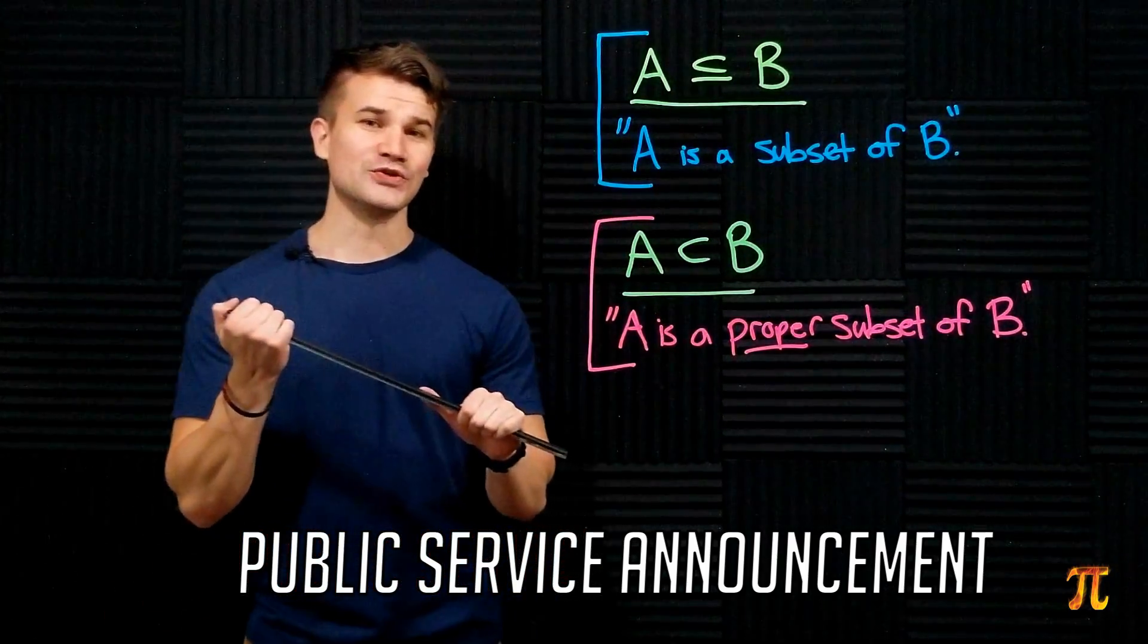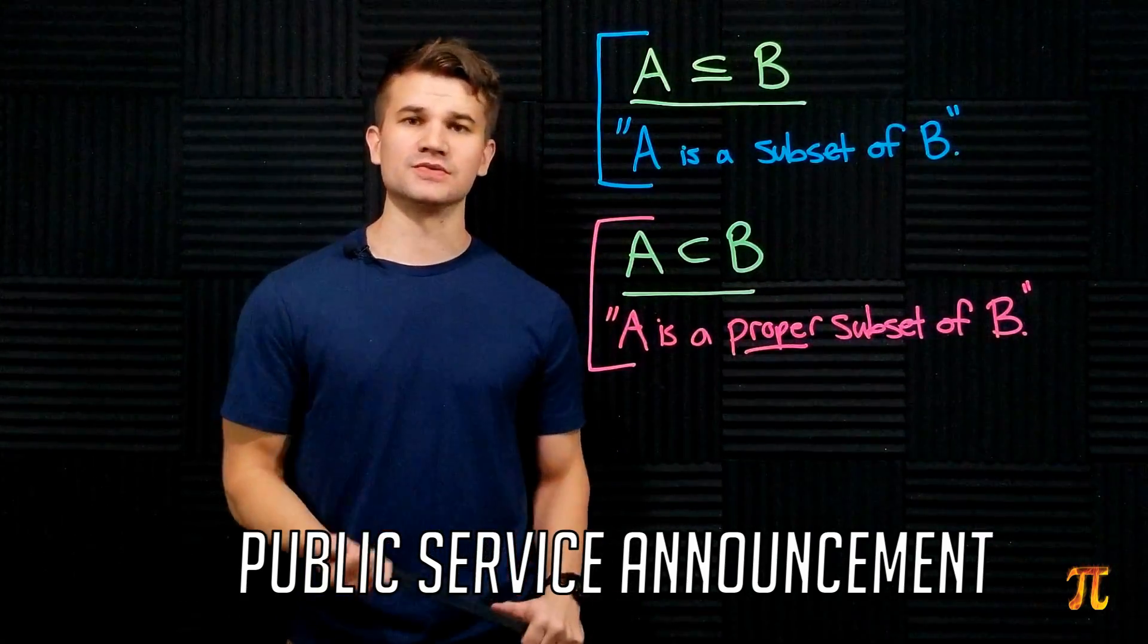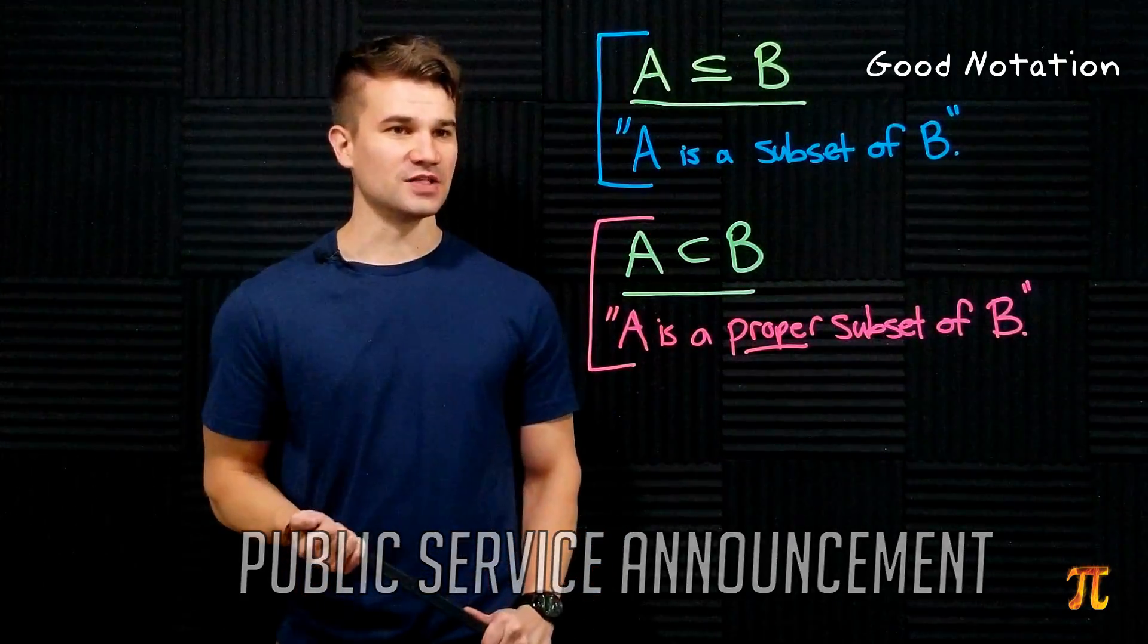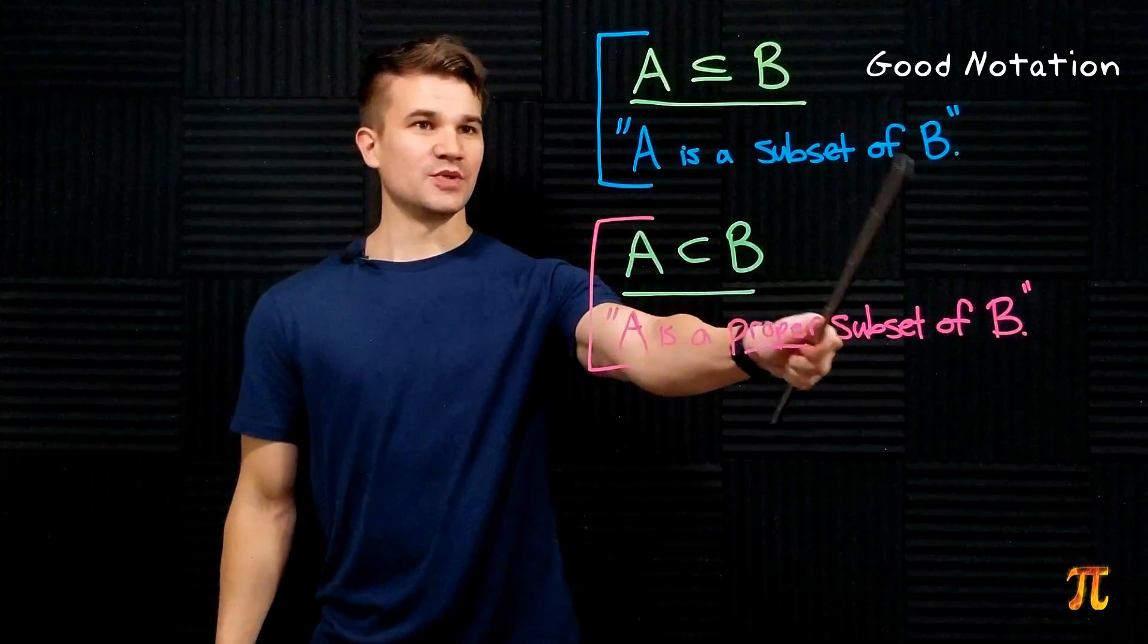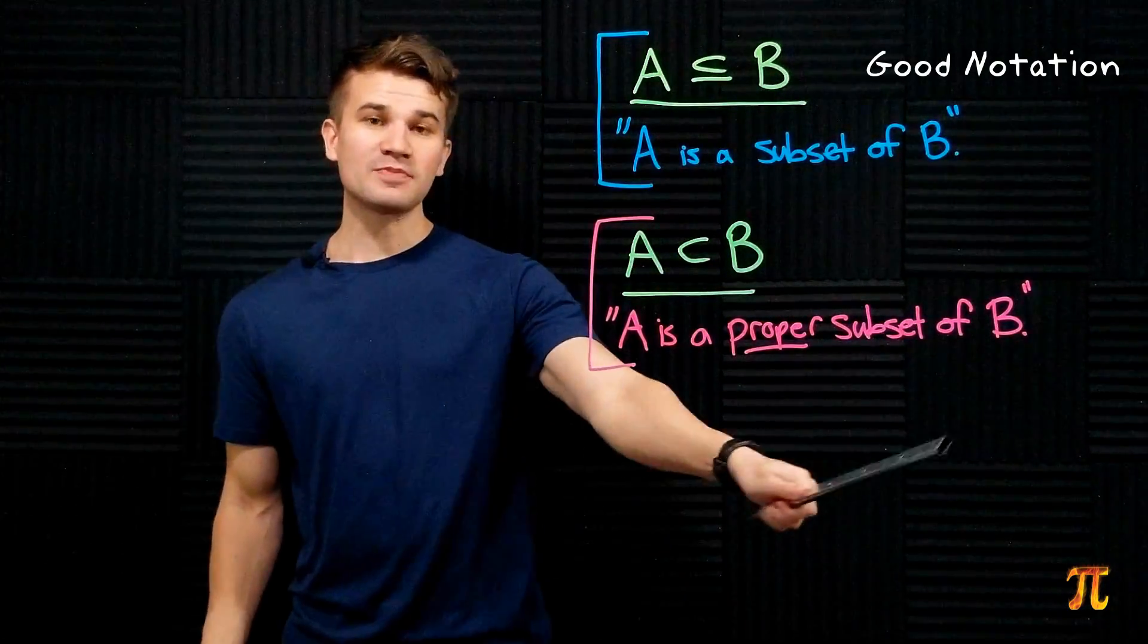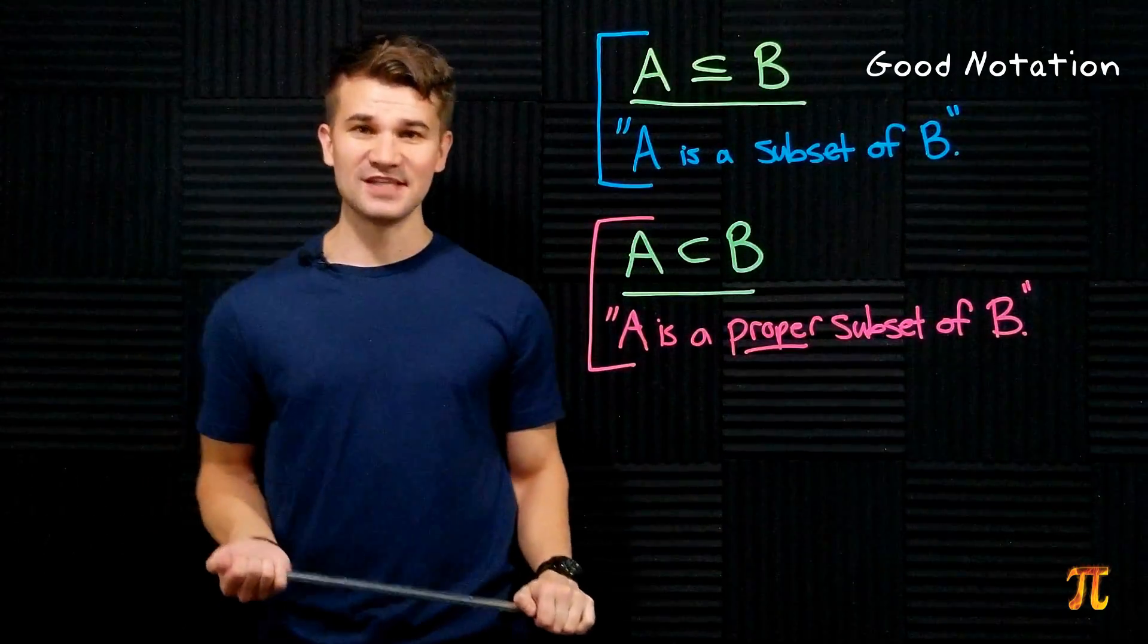When I first learned basic set theory, I was taught the canonical biblical notation for subset and proper subset. If A is a subset of B, we write this A subset B. If A is a proper subset of B, that is A is a subset of B but is not equal to B itself, we write A proper subset of B.